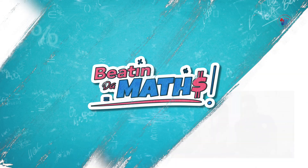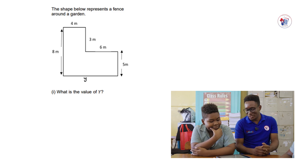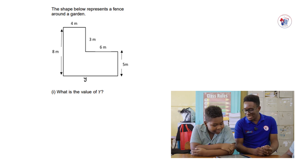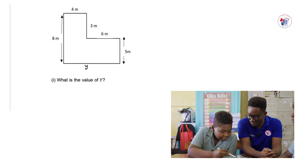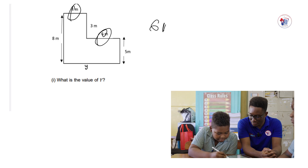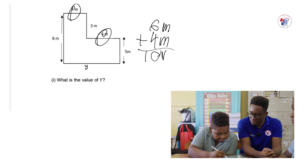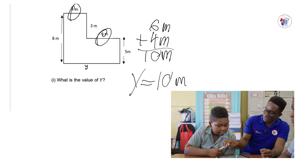So this question says: the shape below represents a fence around a garden. What is the value of Y? So you see 6 meters, which lines up with line Y, and 4 meters also lines up with line Y. So I put 6 meters plus 4 meters, which equals 10 meters. That means line Y is equal to 10 meters.